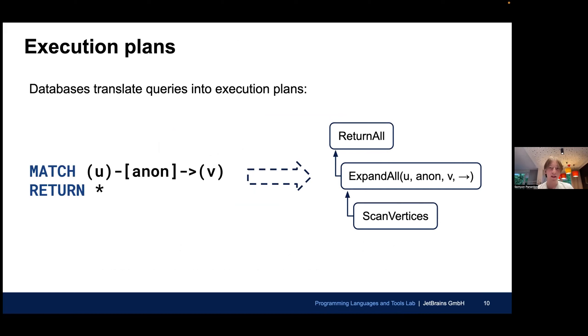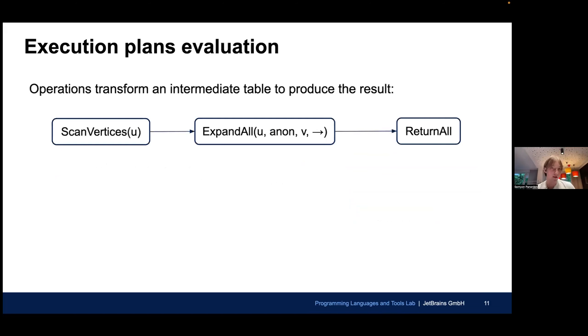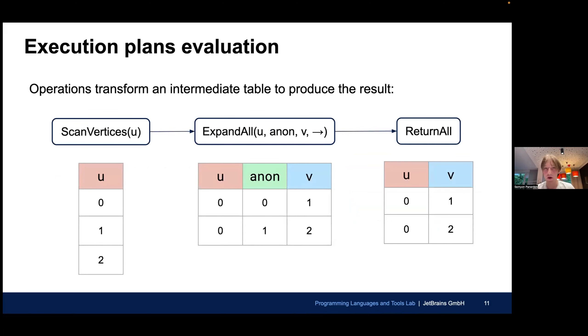What real databases do is that they first translate your queries into intermediate representation called execution plan, and then execute this execution plan. An execution plan is basically a sequence of operations that need to be performed in order to evaluate the query. The execution starts from the leaf operation, which produces a table to begin with. Subsequent operations take this table and transform it by adding, removing, or modifying records. And the resulting table is the result of the query.